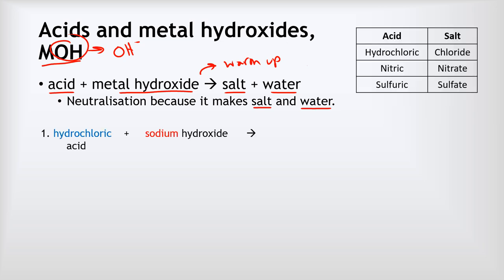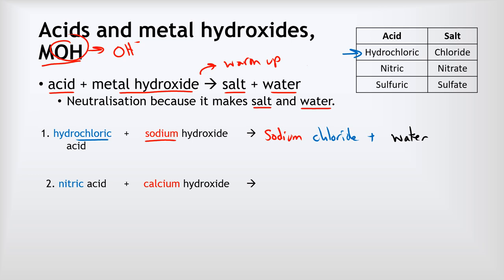Let's look at some worked examples. First: hydrochloric acid and sodium hydroxide. The metal in sodium hydroxide gives us the cation — sodium. Hydrochloric acid makes a chloride salt, so the product is sodium chloride, plus water for the neutralization. Second: nitric acid and calcium hydroxide. The cation is calcium, nitric acid makes nitrate salts, so this gives calcium nitrate, and again we also make water.